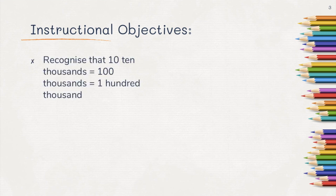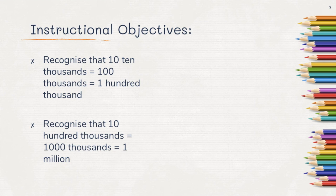First, recognize that 10 ten thousands is equal to one hundred thousand. Second, recognize that ten hundred thousands is equal to one thousand thousands or simply one million.